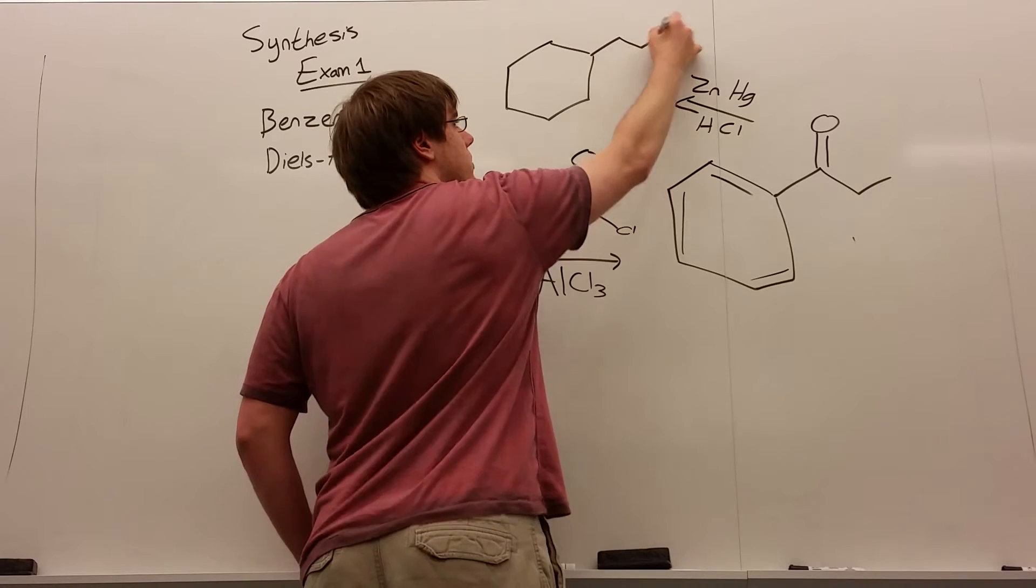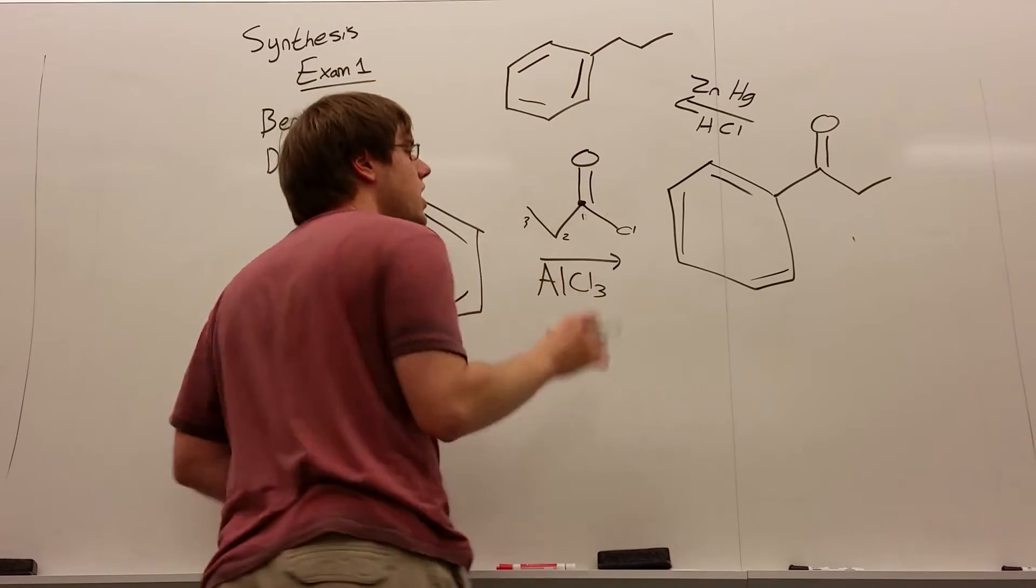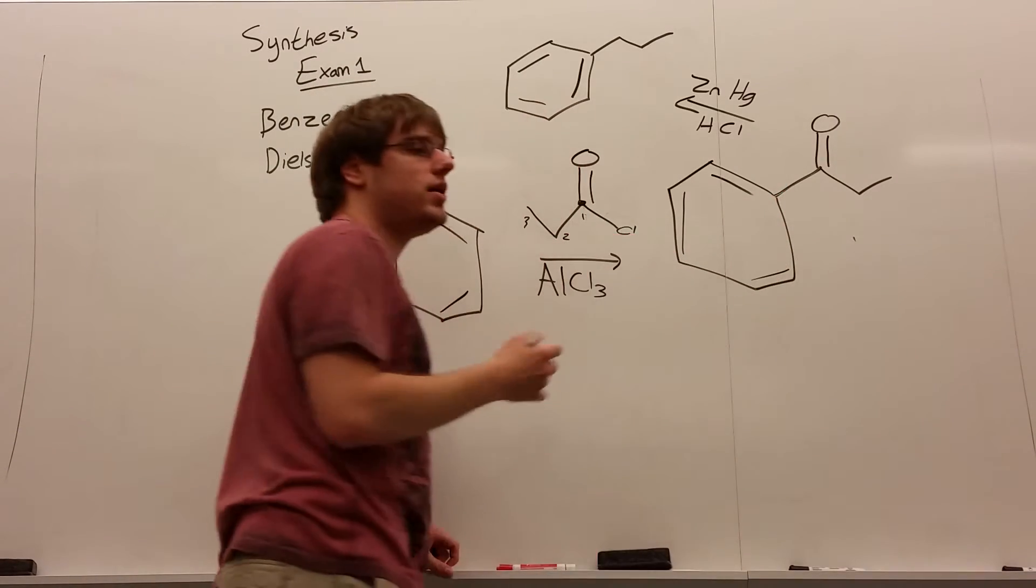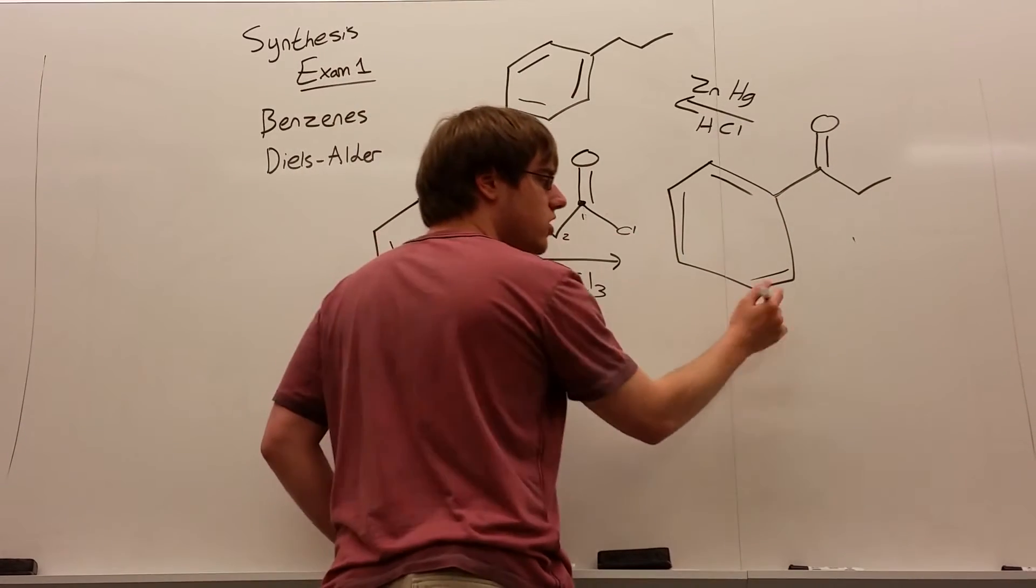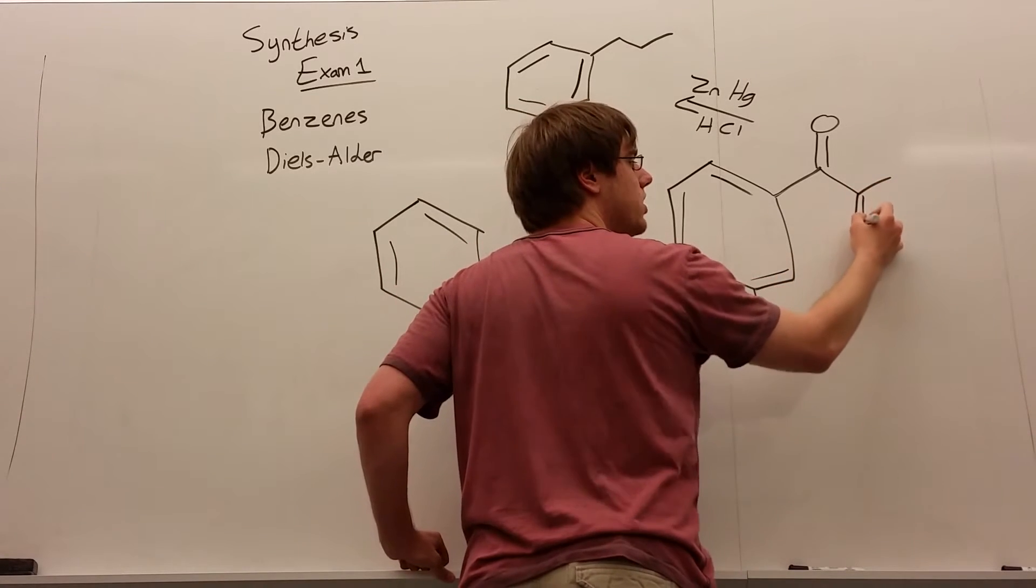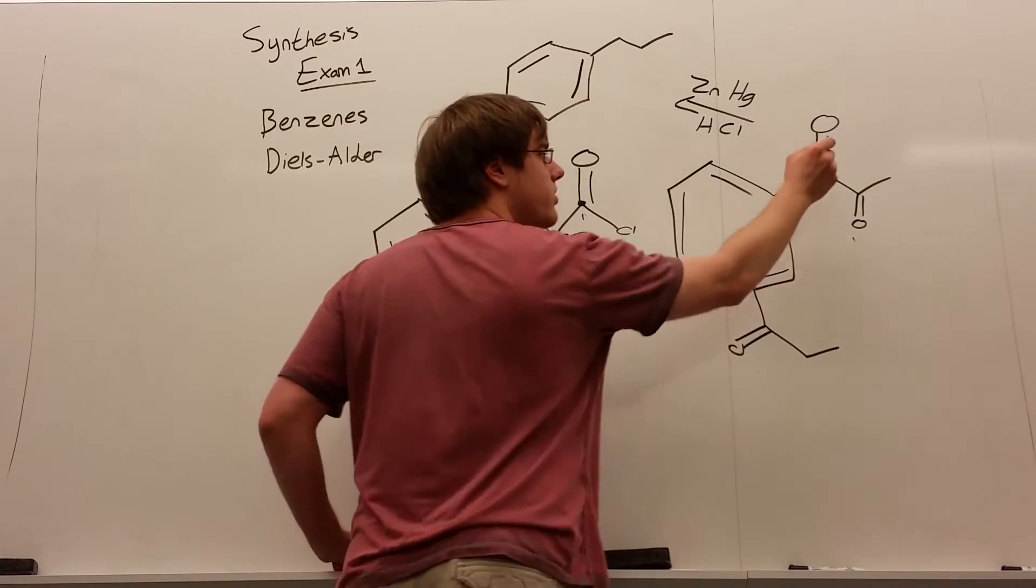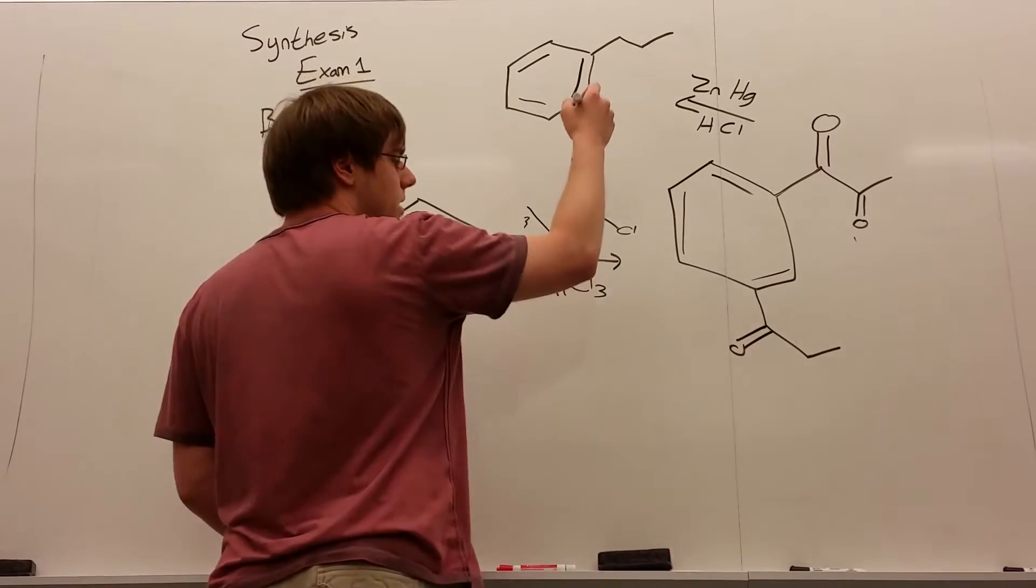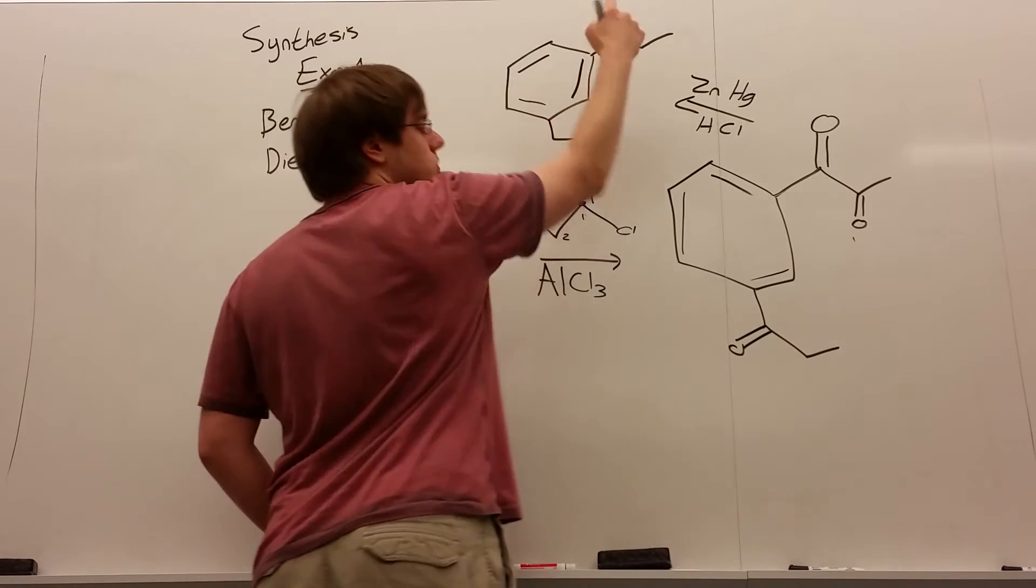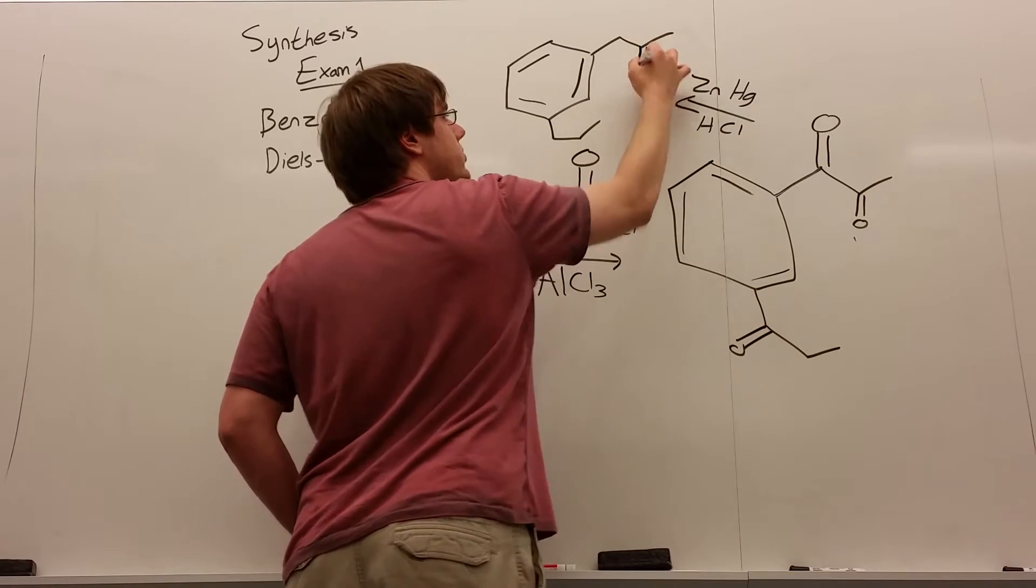Now, this reaction, this zinc mercury with HCl, is particular in what kind of carbonyls it reacts with. It only touches carbonyls that are a single bond away from the benzene ring, which means if I took this structure and said, okay, well, what if it looked like this? Double bond O here, and I put a double bond O over here. Well, what I would get is only this carbonyl and this carbonyl are a single bond away from the benzene, which means when this reacts, this one is gone, this one is gone. But because this carbonyl is two bonds away, it will still be there.